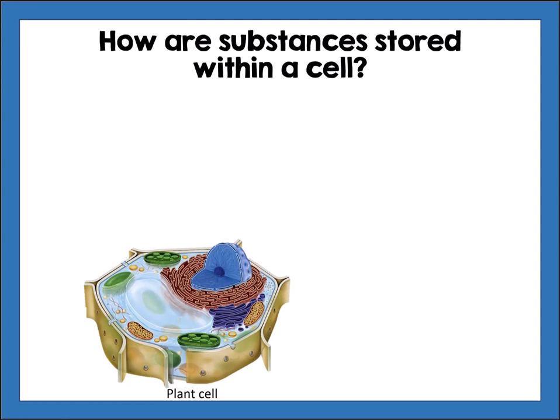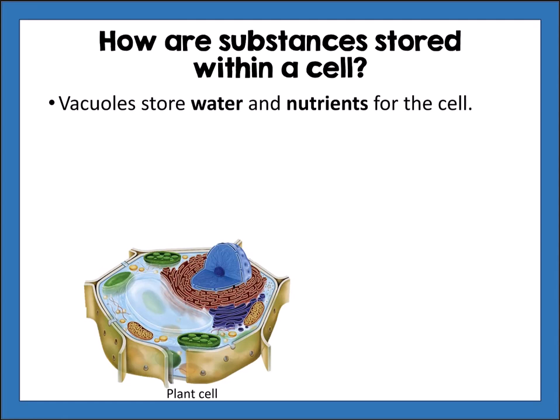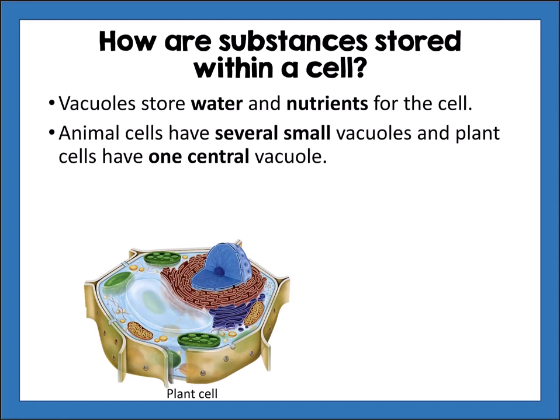How are substances stored in the cell? Vacuoles store water and nutrients. Animal cells have several small vacuoles and plant cells have one central vacuole. You can see on this picture the vacuole is this large bubble-like structure that stores nutrients and water, especially in a plant cell.